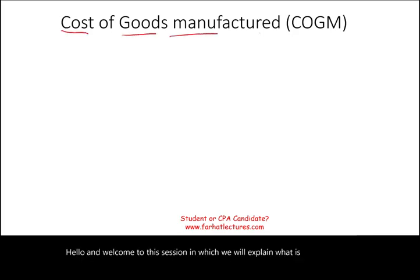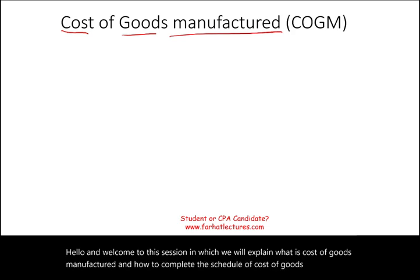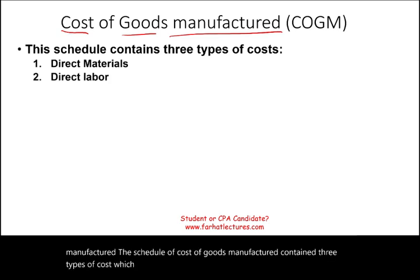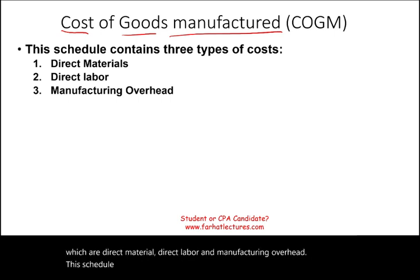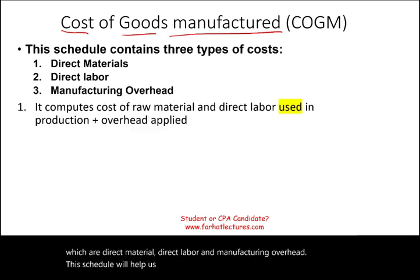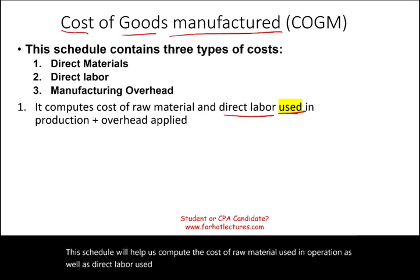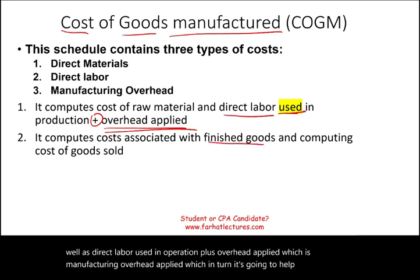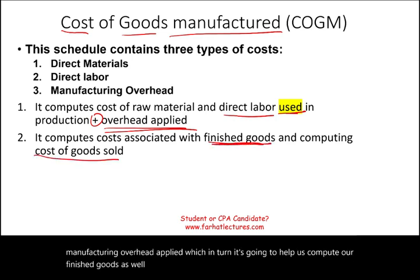Hello and welcome to this session in which we will explain what is cost of goods manufactured and how to complete a schedule of cost of goods manufactured. The schedule contains three types of cost: direct material, direct labor, and manufacturing overhead. This schedule will help us compute the cost of raw material used in operation, direct labor used in operation, plus manufacturing overhead applied, which will help us compute finished goods as well as cost of goods sold.